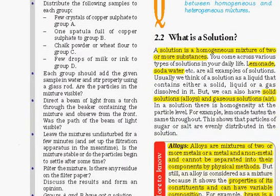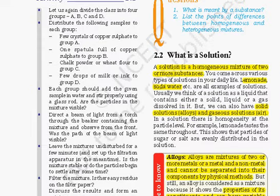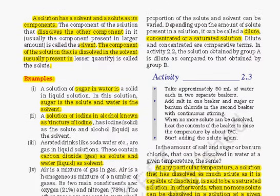A solution is a homogeneous mixture of two or more substances. We daily drink lemonade, which is a mixture of lemon juice and water — it is a solution. Soda water is also a solution of a carbonated drink. There are types of solutions: solid solutions called alloys, and gaseous solutions like air. Alloys are mixtures of two or more metals or non-metals. For example, brass is an alloy of 30% zinc and 70% copper. Alloys are still mixtures because they retain various properties of their components.